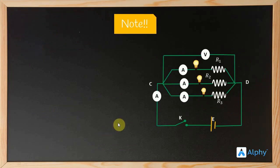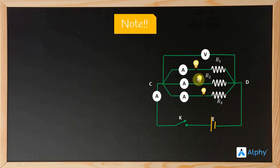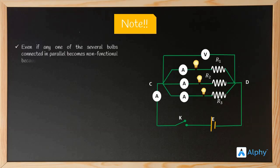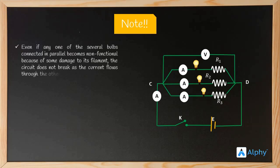In this circuit diagram with parallel connection, bulbs have been added. If one of the bulbs is damaged, current can still flow through the other paths. Even if any one of the several bulbs connected in parallel becomes non-functional because of some damage to its filament, the circuit does not break as the current flows through the other parts.